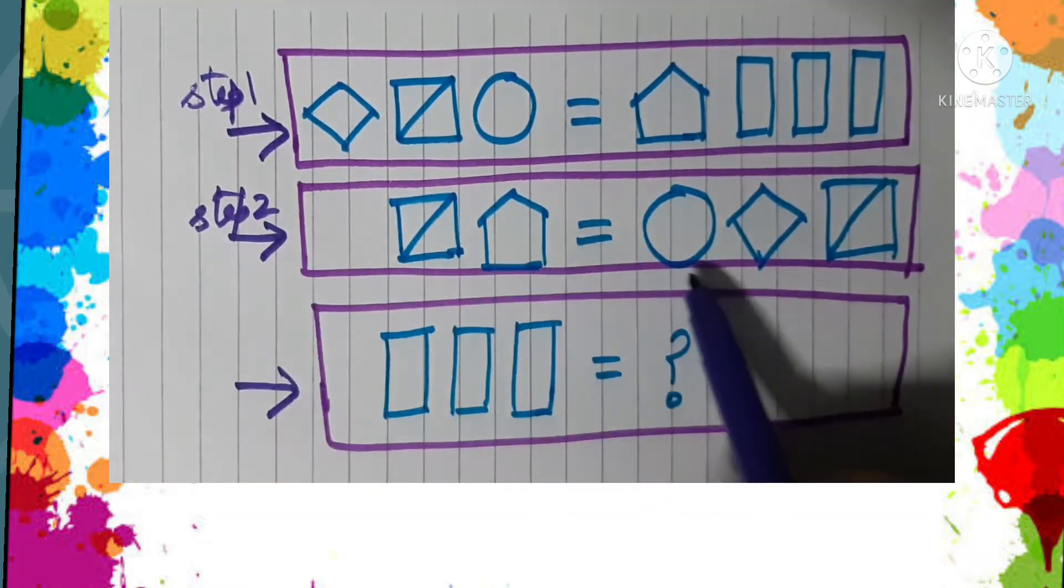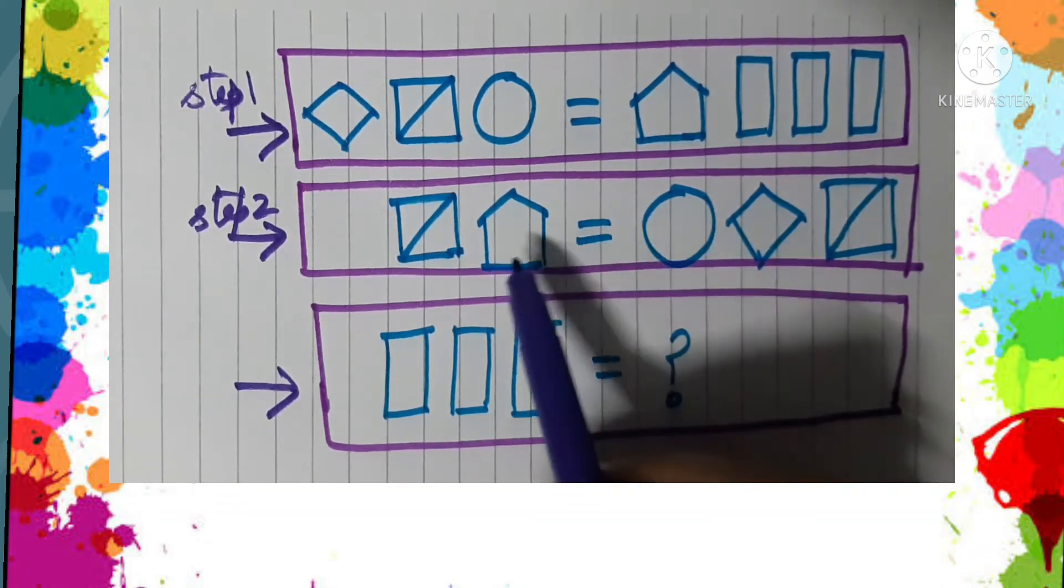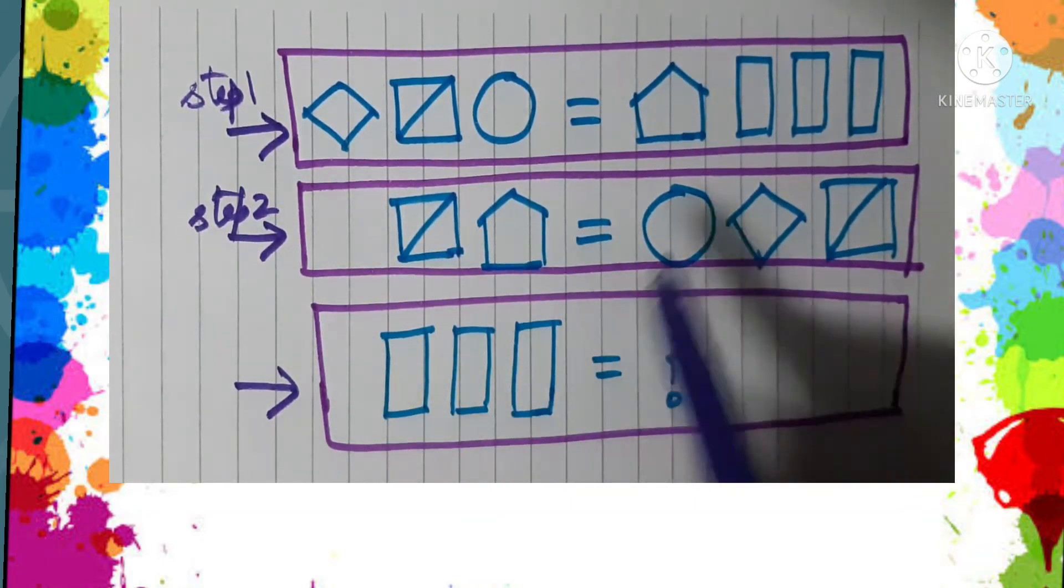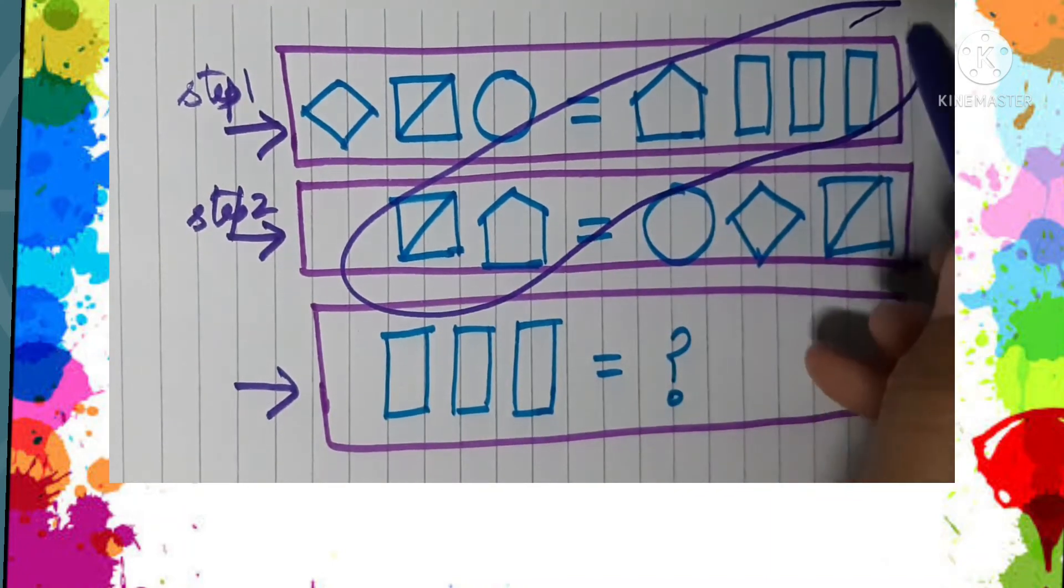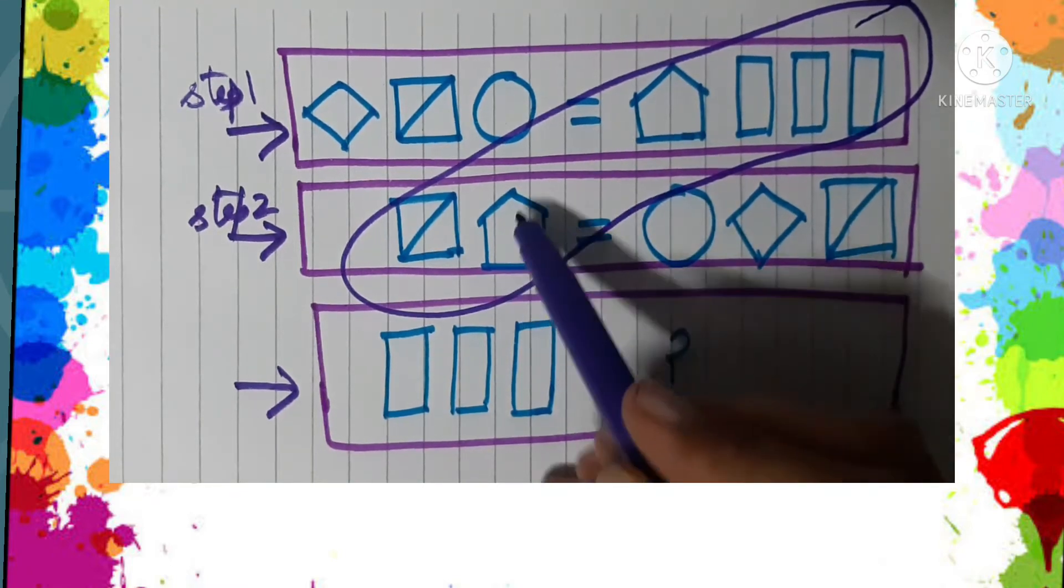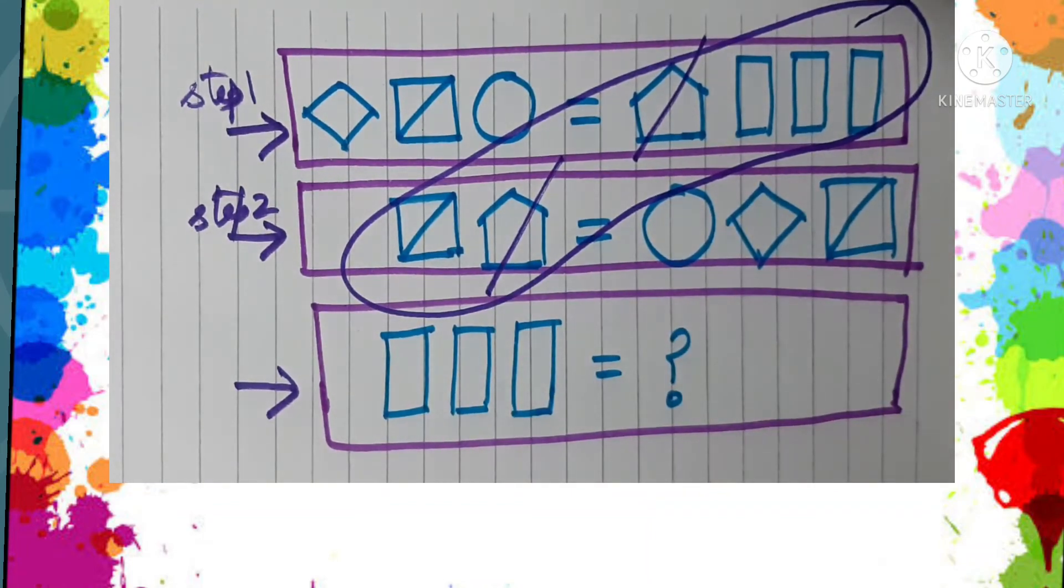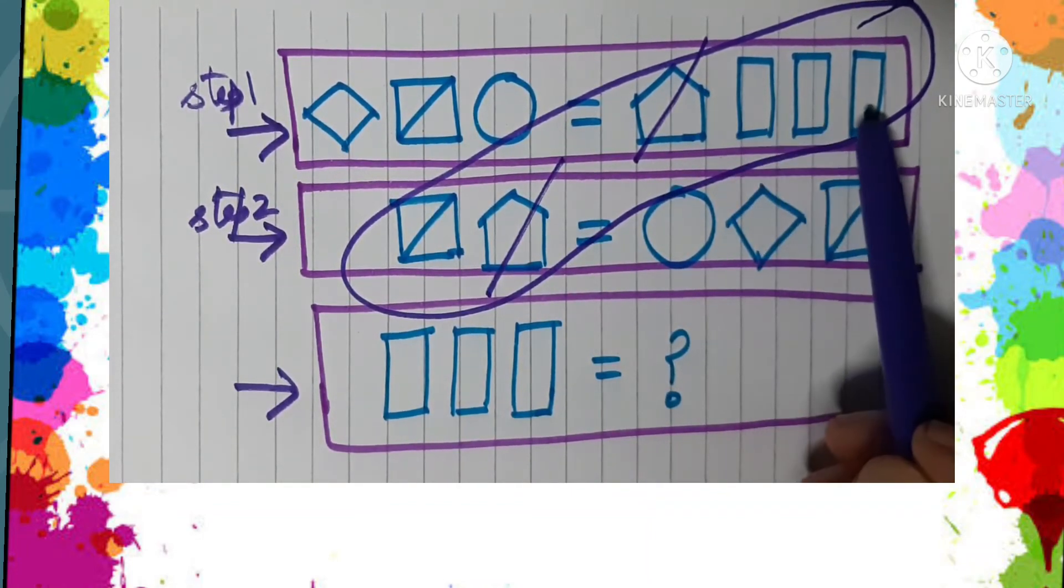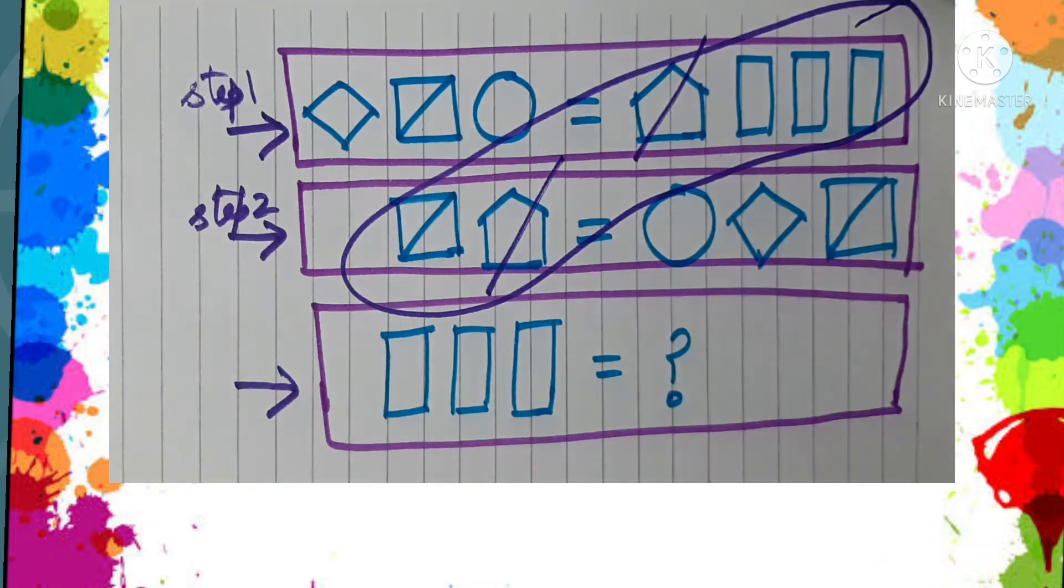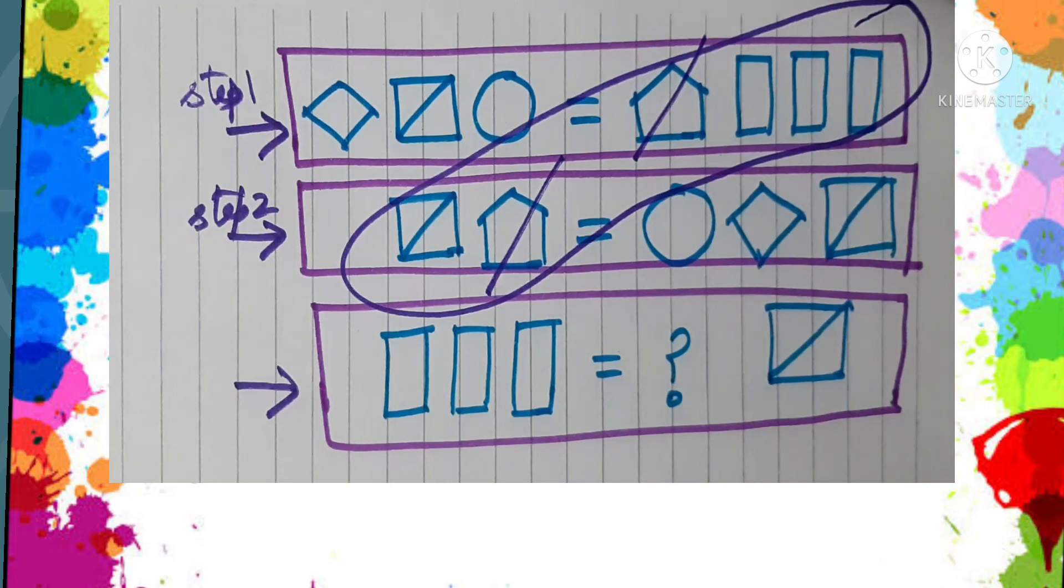So we can now compare these two. When we compare these two, then we see that here we have a pentagon and here also we have a pentagon. So we get the relationship that these three rectangular bars, they are equal to, yes you are right, a square with a diagonal. Isn't it interesting?